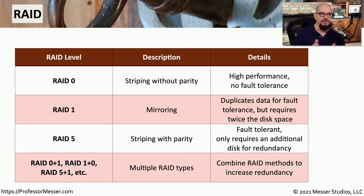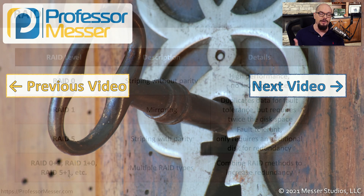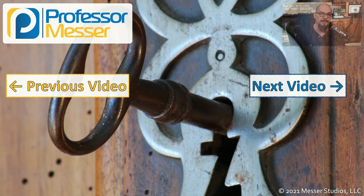And of course, there are combinations of RAID that you can choose — RAID 0+1 or 1+0, RAID 5+1, and other combinations as well. By combining these RAID types together, you can customize the redundancy for your purposes, and you'll be prepared regardless of what physical drive might fail.